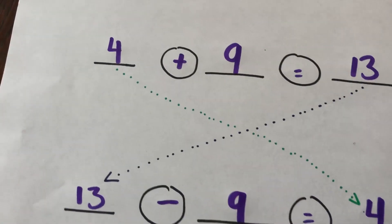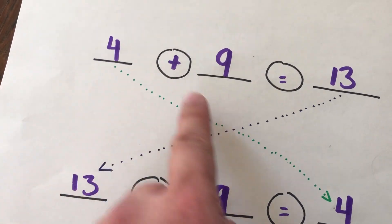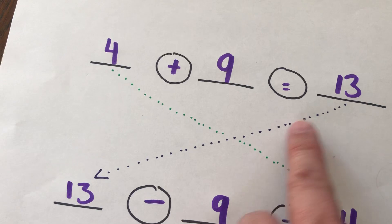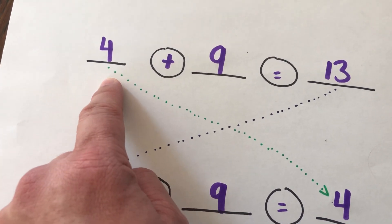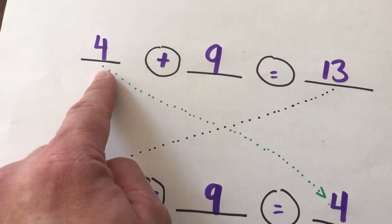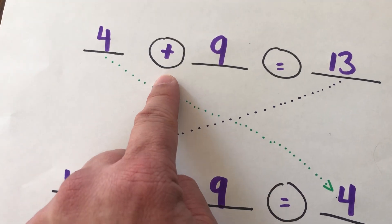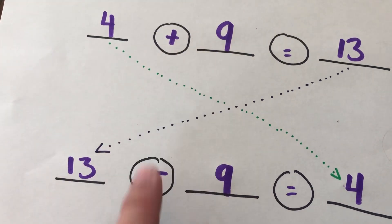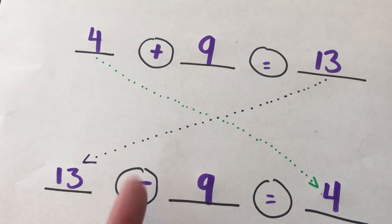And when we're comparing subtraction and addition, we call it the double switcheroo because you switch your numbers right here. We move the largest number to the beginning, and we move the smaller number. It doesn't have to be the smallest. It could just be one of the smaller numbers we move to the end. And then we also switch the sign from addition, from plus, to subtraction, minus. So we switch the numbers, and we switch the sign.